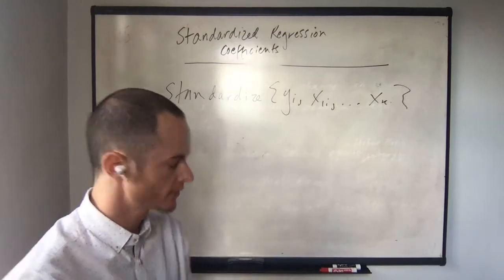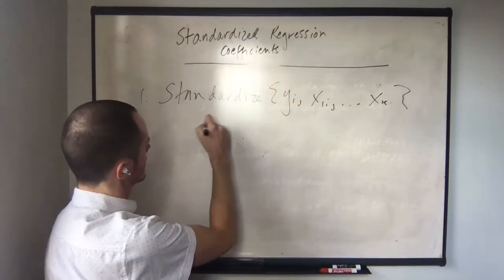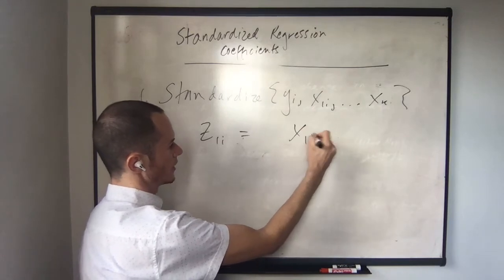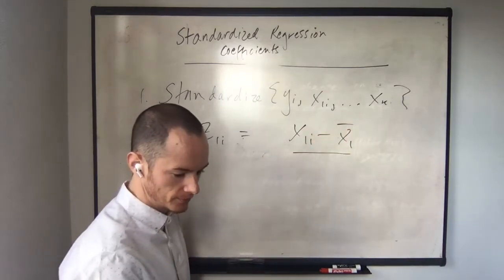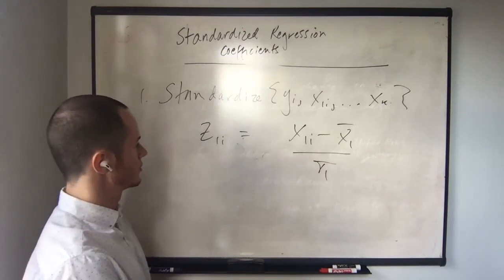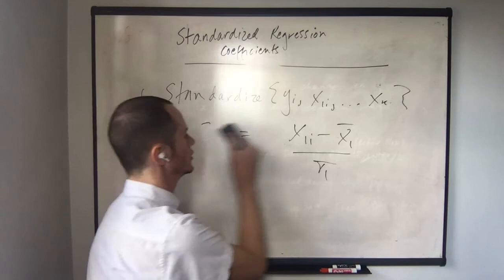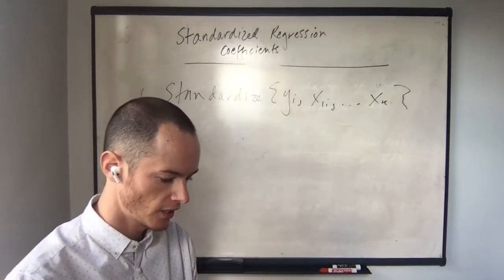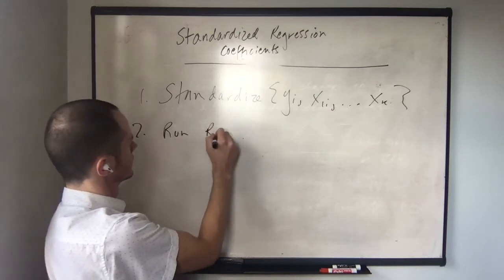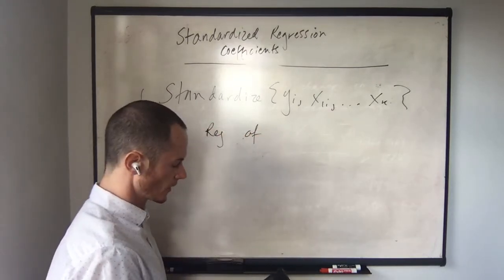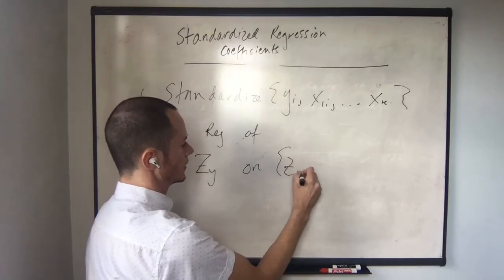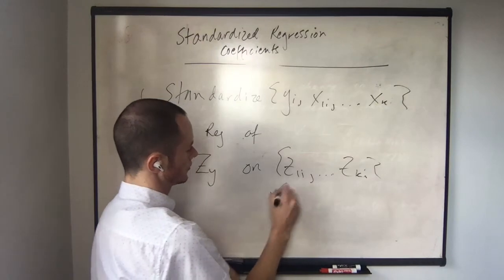What do we mean by standardized? You're going to generate a series of variables. For instance, z1i is equal to x1i minus x1-bar, all over the standard deviation of x1. That's your z1i. So you need to standardize all of these variables.